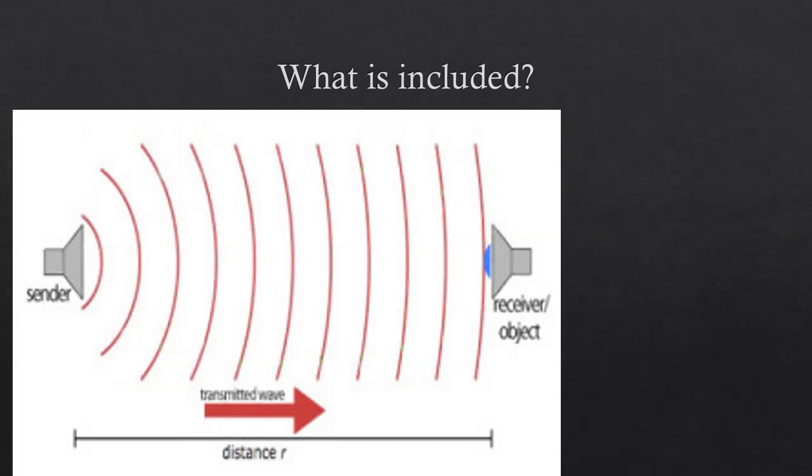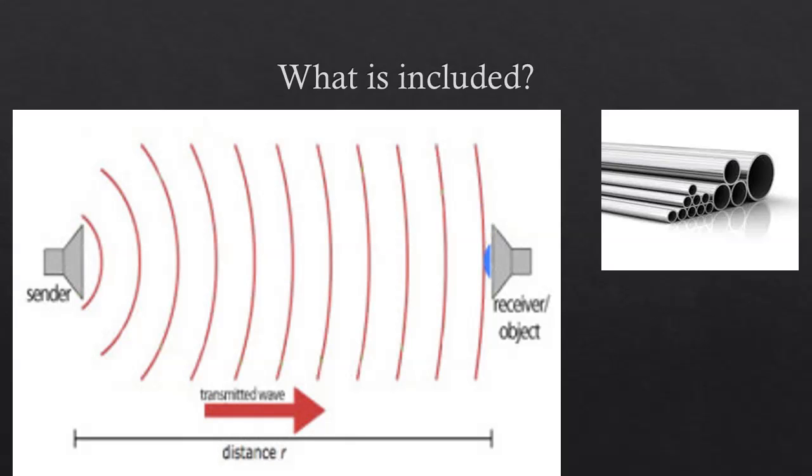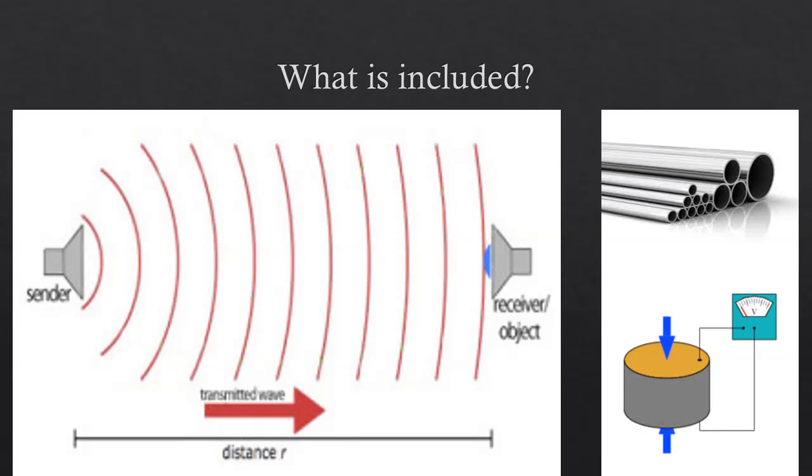What is included? This is the photo of ultrasonic transmitter and ultrasonic receiver. Ultrasonic transmitter transmits the waves and the ultrasonic receiver receives the wave. This is a gas-filled hermetically sealed tube. This is the photo of piezoelectric crystal.